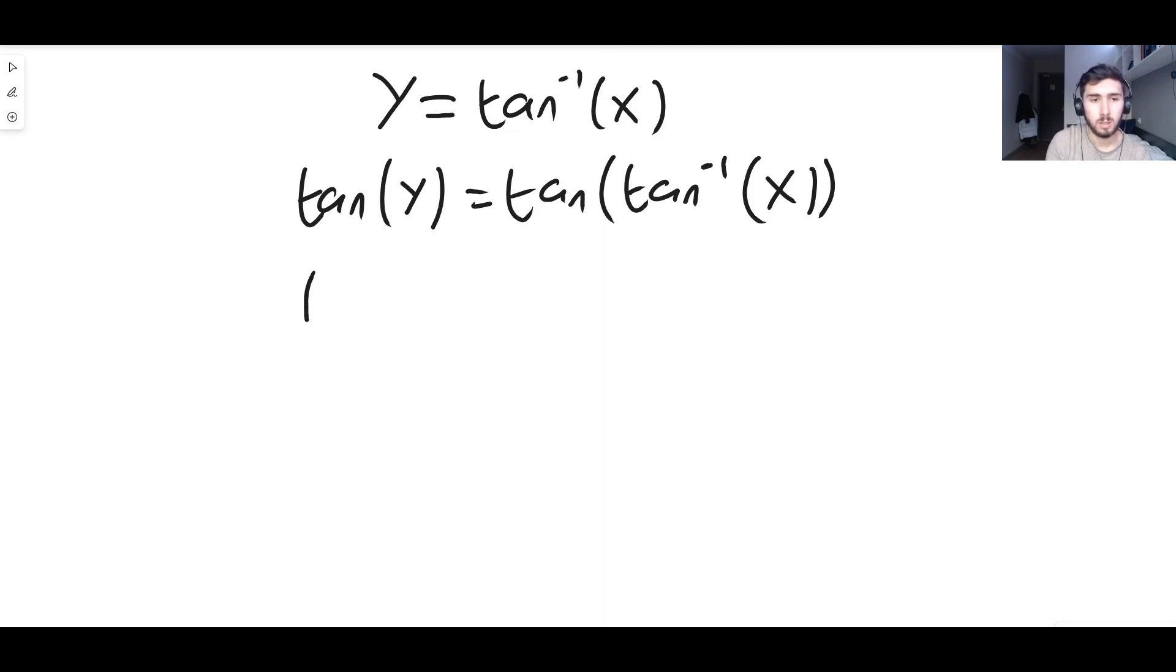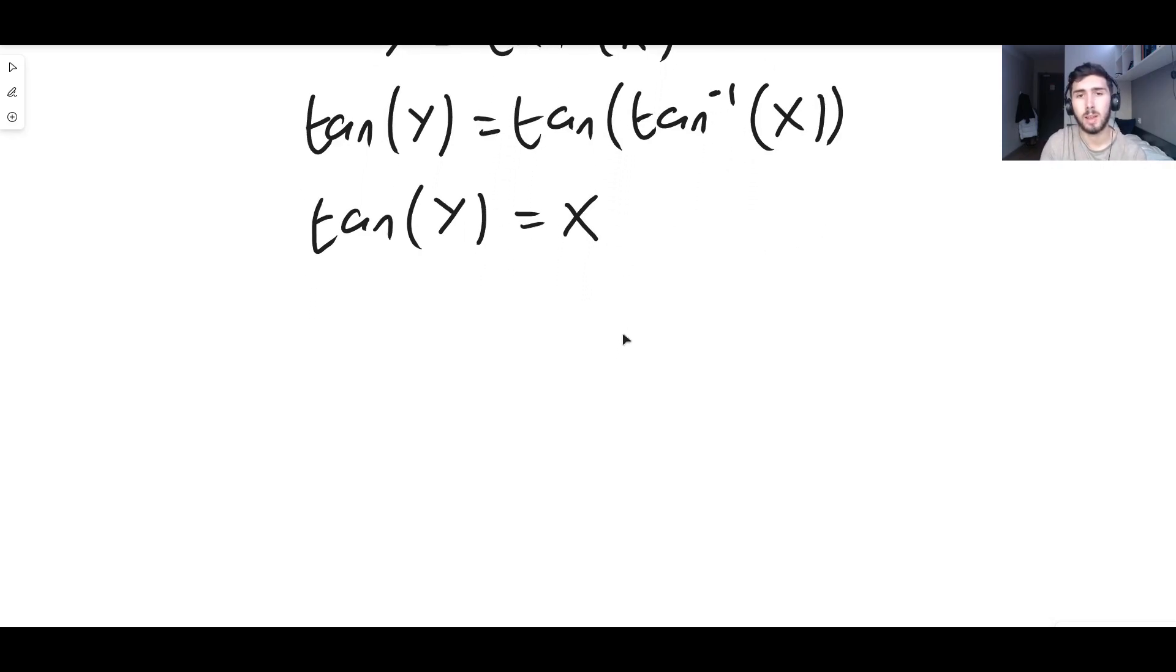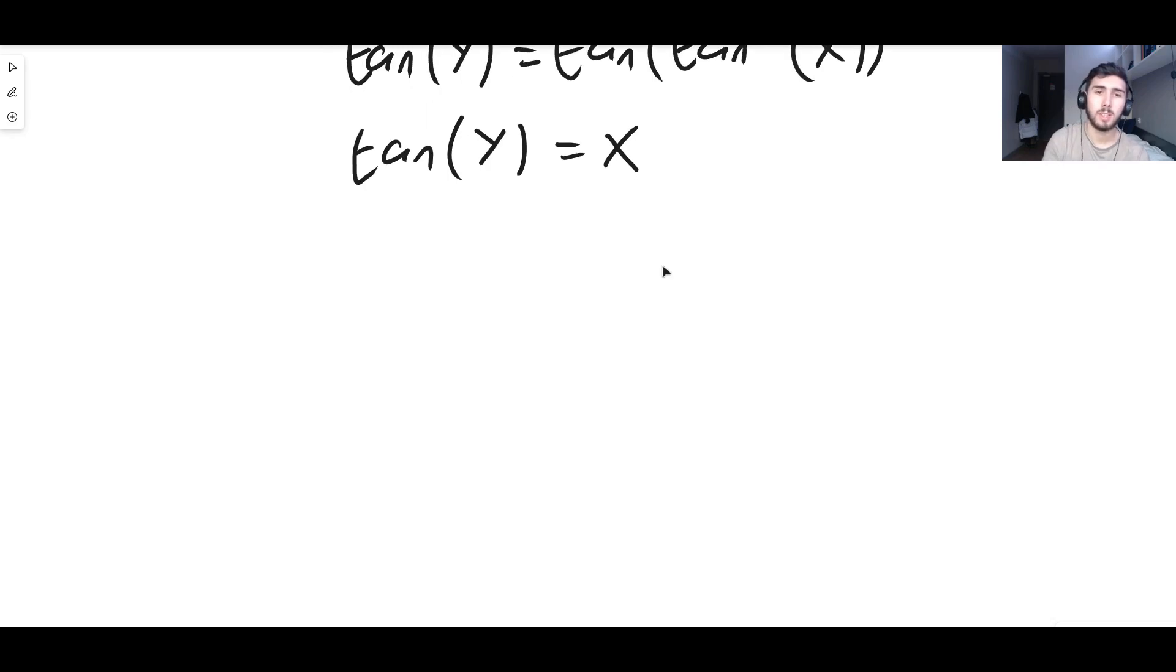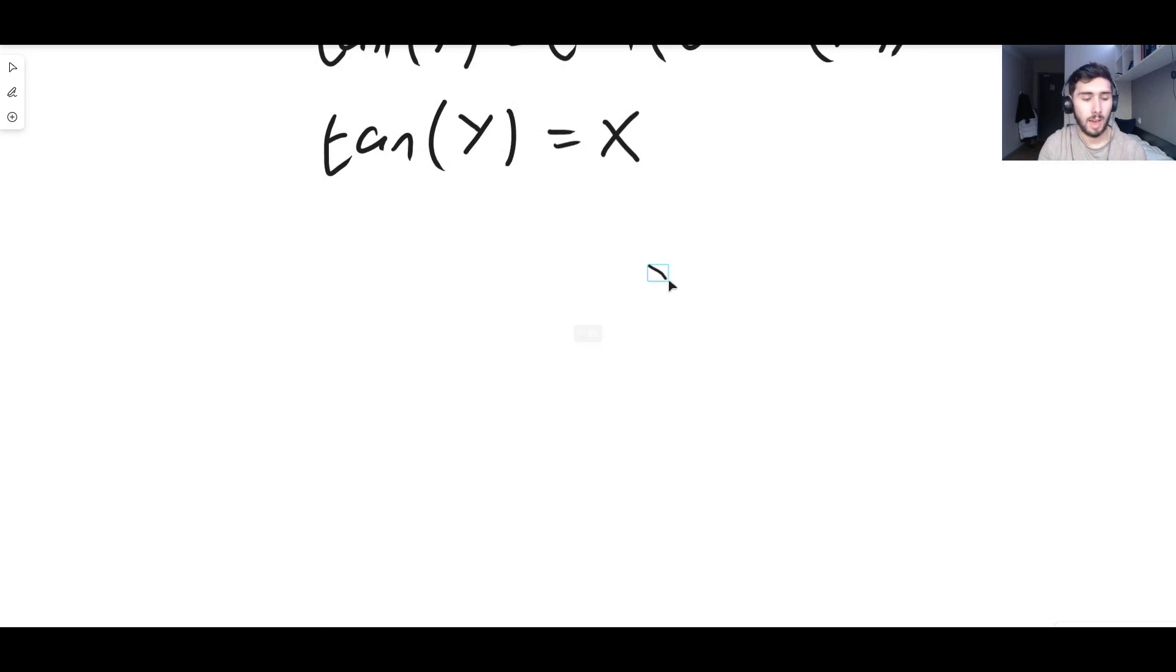This means that some things simplify very nicely. Tan of y is equal to tan of inverse tan of x. By definition these are inverse functions. Whatever arctan is doing to x, tan is undoing it, and therefore this just leaves us with x. This is basically f of inverse f of x, which is always x. So now we have this equation: tan(y) equals x.